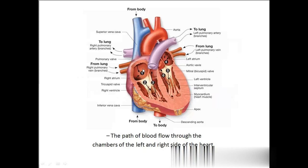First point: the right atrium receives blood from the superior vena cava and inferior vena cava. It goes to the second point, the right ventricle. From the right ventricle it goes to the pulmonary artery for oxygenation. After oxygenation, the blood comes to the pulmonary veins — that's the third point. From the pulmonary veins it goes to the fourth point, the left atrium. From the left atrium the blood goes to the left ventricle, and from there to the aorta — the sixth point — which carries blood to all body parts. This is the circulation of the blood, and in this circulation we have two loops: pulmonary circulation and systemic circulation.